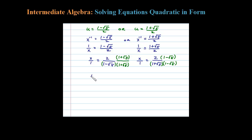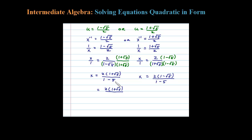Simplifying: x equals 2 times (1 plus √5) all over — multiplying (1 minus √5)(1 plus √5) gives 1 minus 5, which is negative 4. Similarly, the other solution gives 2 times (1 minus √5) over negative 4. Canceling the factor of 2, we get (1 plus √5) over negative 2 and (1 minus √5) over 2.